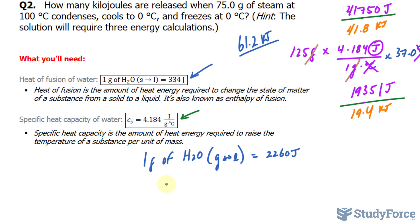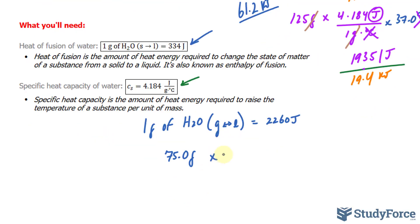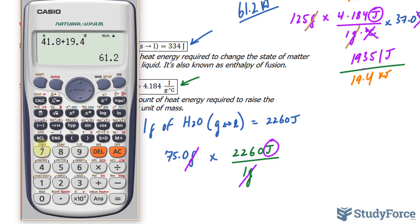So I'll take 75.0 grams of steam and multiply that to this conversion ratio. I'll make sure that this number is at the top in the numerator, and at the bottom we have one gram. This unit and this unit will cancel out giving us the amount of joules required simply to go from steam to liquid. Using our calculator, 75.0 times 2260, we get 169,500, and that's in joules.